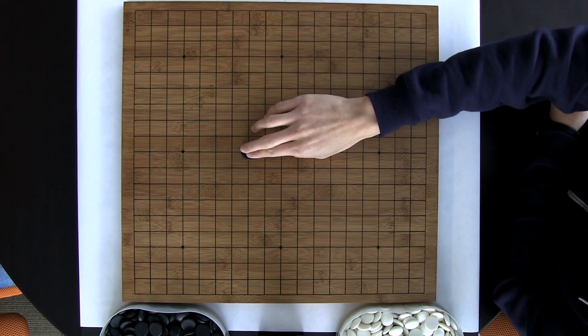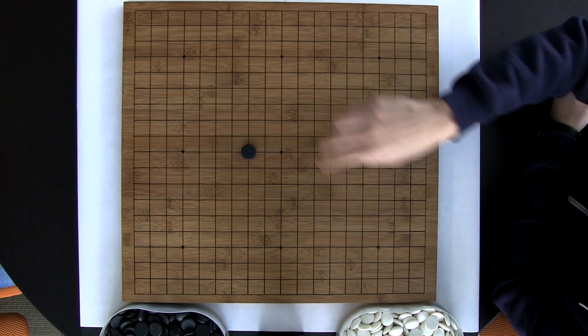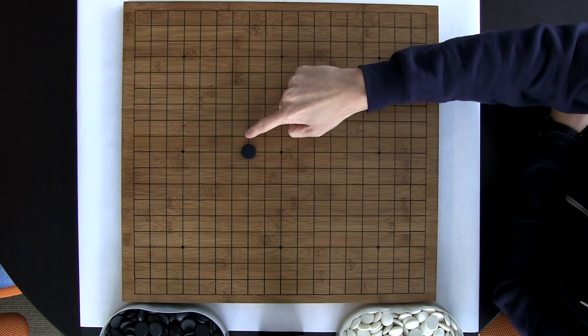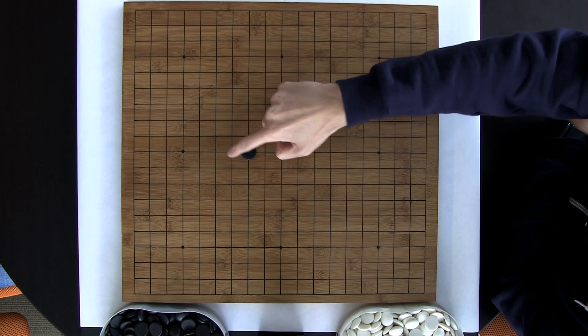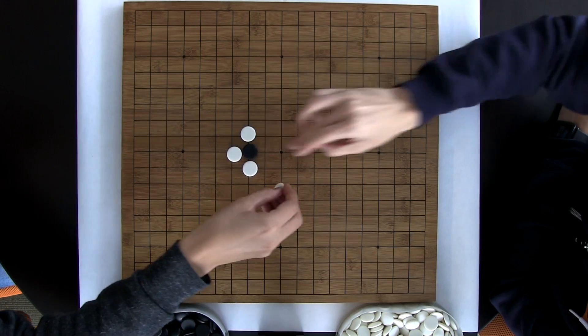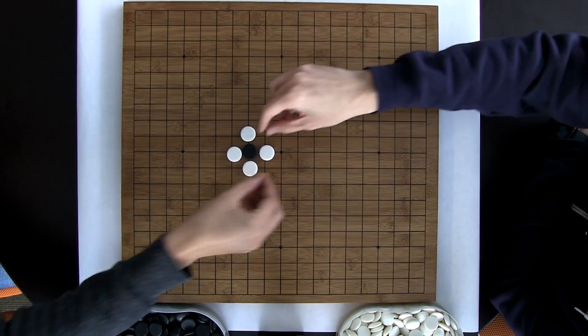The next thing to remember is how stones are captured. So stones are placed on the intersections of the board, and each of these intersections is touching four additional intersections. These are called the liberties of a stone. And when the liberties are all taken up by pieces of the opposing color, so when the fourth stone is played, then the opposing stone is captured.